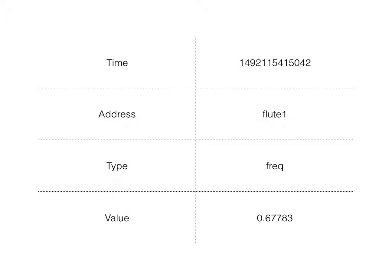The address serves as the purpose of a MIDI channel. Addresses allow us to route events to the matching device. The type tells us the parameter involved, such as pitch, volume, or any other parameter we desire.